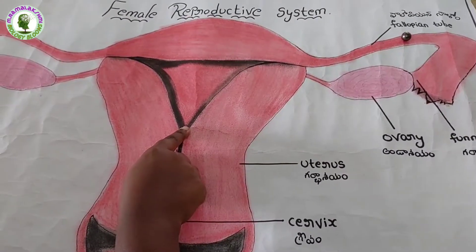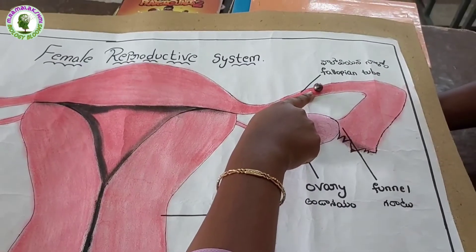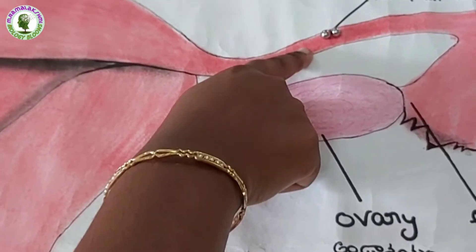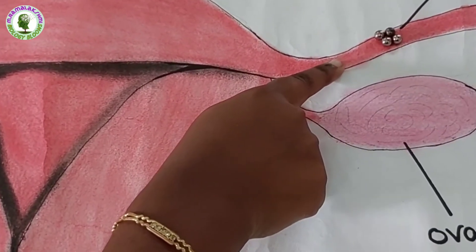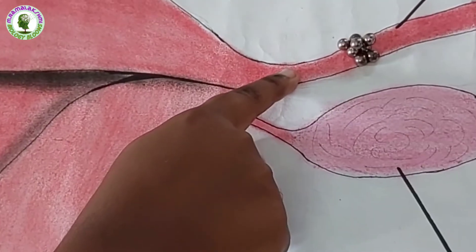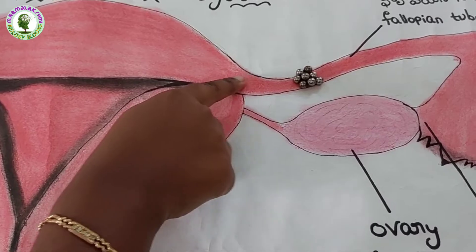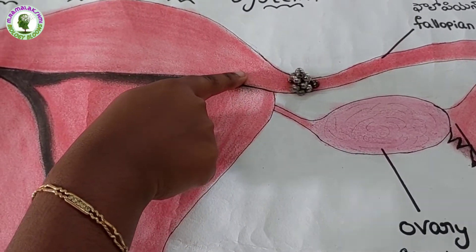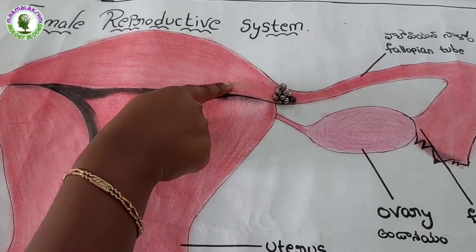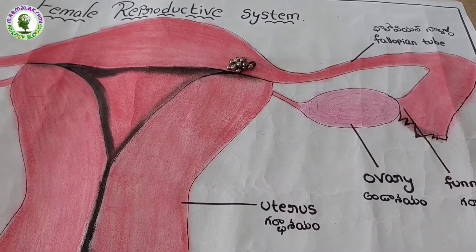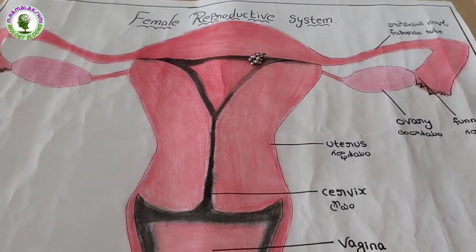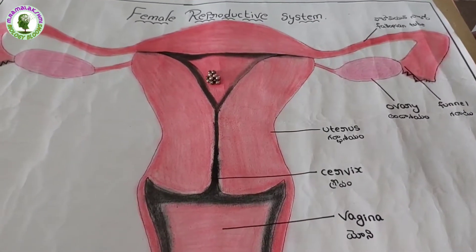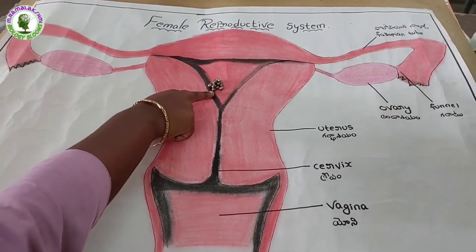The endometrium will be ready to receive the embryo. The zygote undergoes mitotic division while traveling down the fallopian tube and transforms into a solid ball of cells called a blastocyst. This blastocyst moves down the oviduct and finally attaches to the soft tissue of the uterus — this is known as implantation.